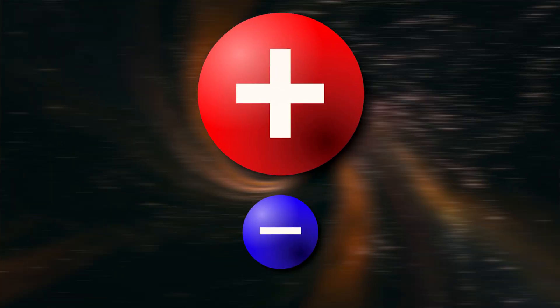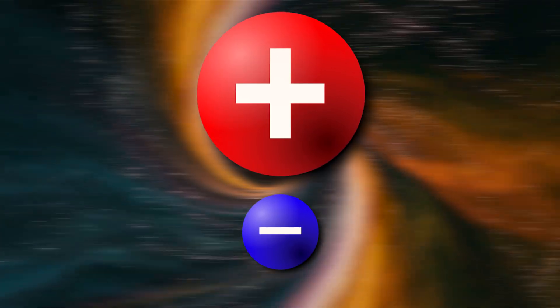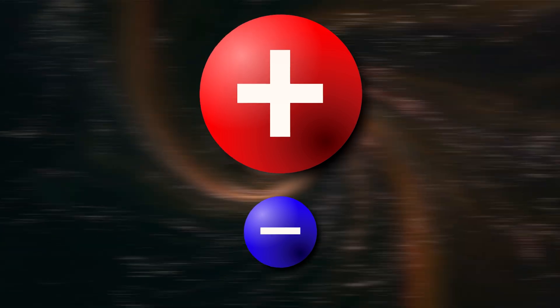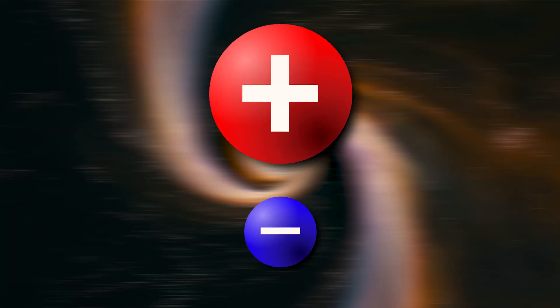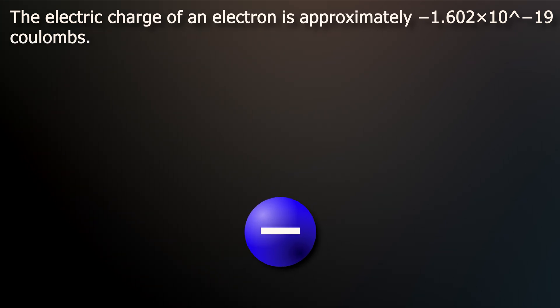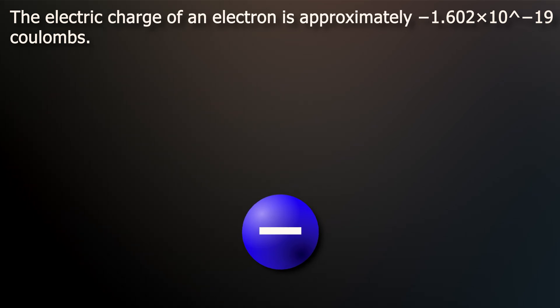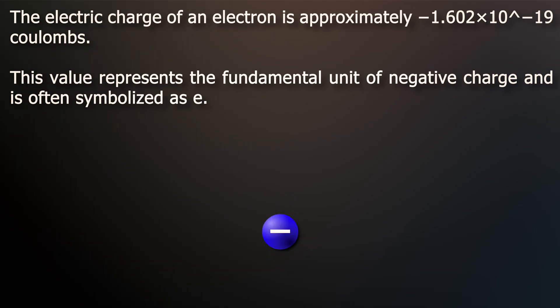Both the electrons and the protons' electric charges are also considered quantized. The charges are discrete and common integer multiples of the elementary charge E. The electric charge of an electron is approximately minus 1.602 times 10 to the minus 19 coulombs. This value represents the fundamental unit of negative charge and is often symbolized as E.